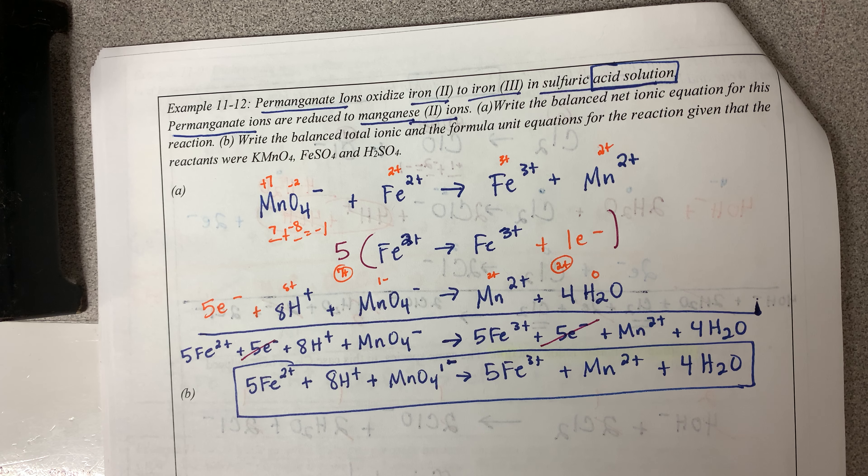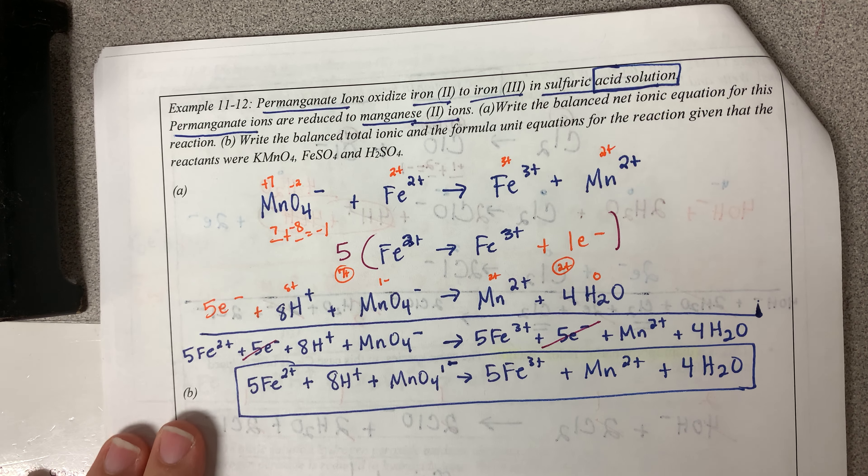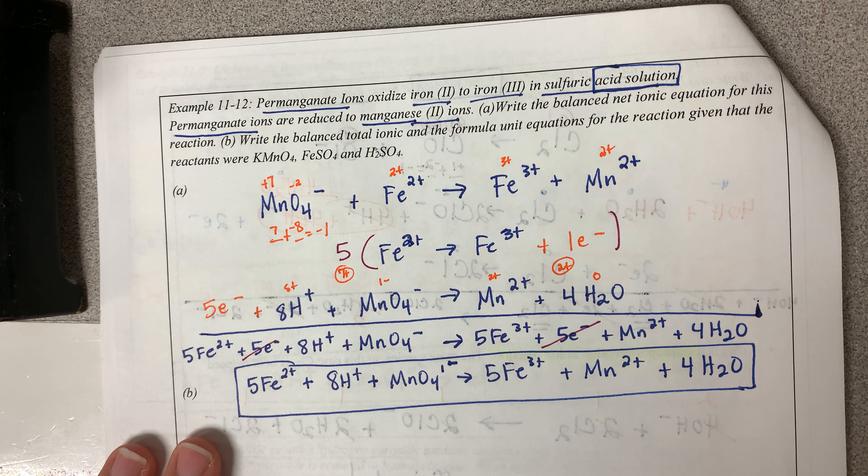Okay, so this is the second half of example 11.2, part B. We already calculated or found the balanced redox reaction, pretty straightforward. It's an acidic solution.